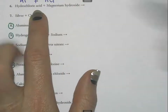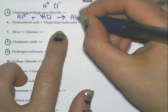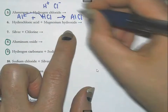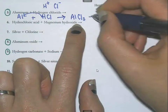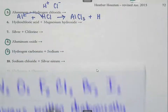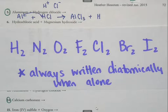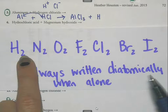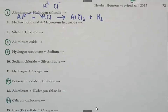So I'm going to take aluminum and hydrogen and have them switch places. On the other side of the arrow, Al goes with Cl — but Al has a charge of plus 3 and Cl has a charge of minus 1, so that makes AlCl3. Then hydrogen comes out by itself. Remember: there are seven elements always written diatomically when alone, so hydrogen is written as H2, not H.